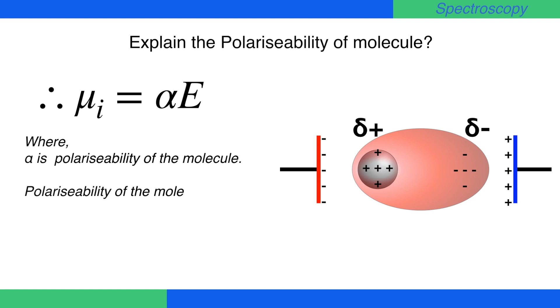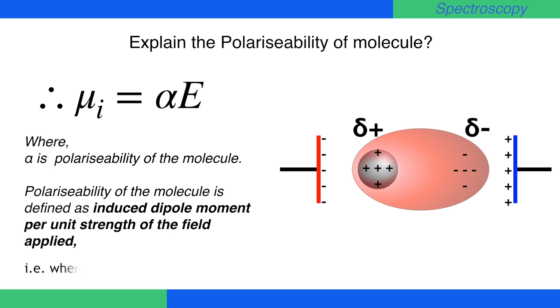Polarizability of the molecule is defined as induced dipole moment per unit strength of the field applied. That is, when E equals 1, then mu i will be polarizability.